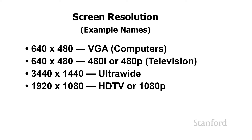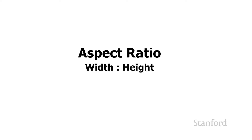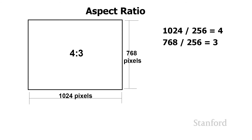One important quality to consider when looking at a monitor or television is the aspect ratio. The aspect ratio is the ratio between the width and the height of the display in pixels, always given as a ratio of two whole numbers. We take the number of pixels wide and the number of pixels tall and find the smallest pair of integers that gives the exact same ratio. For example, a monitor that's 1,024 pixels wide and 768 pixels tall: dividing both by 256 gives us 4 and 3, so we would say this is a 4 by 3 display.